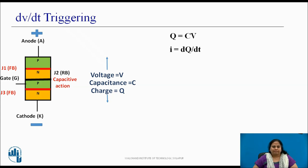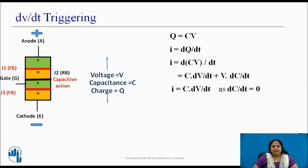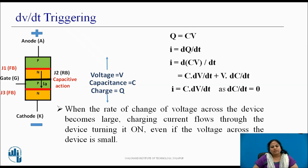If the forward voltage applied across the device is V and C is the capacitance of junction J2, then the charge Q across it is given by Q = CV. For current to flow through it, there should be a flow of charges as I = dQ/dt. Substituting Q = CV, we get I = d(CV)/dt, which on solving gives I = C·dV/dt + V·dC/dt. Thus, current I = C·dV/dt, as the rate of change of capacitance dC/dt is negligible, i.e., nearly zero, since junction capacitance is almost constant. This shows that current flowing through the device is directly proportional to the rate of change of voltage. When this rate of change becomes large, sufficient charging current flows through the device, turning it ON even if the voltage across it is small.